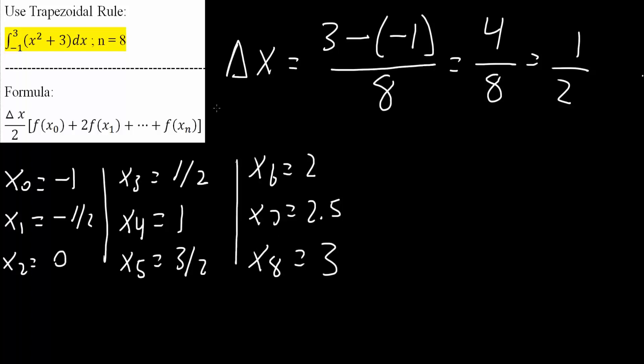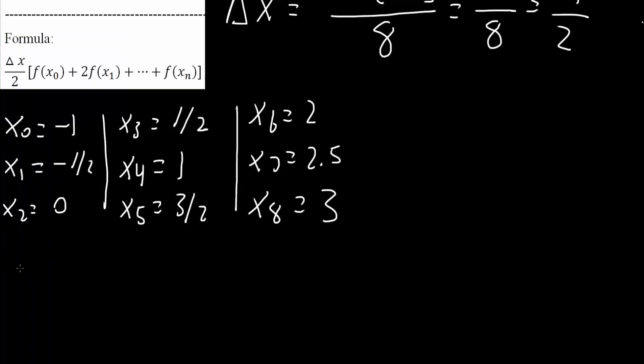So, we have 8, right? And now, we will finally apply this formula. Delta x is 1 half, so we say 1 half, divided by 2, bracket, f x0, meaning, f, parentheses, negative 1.